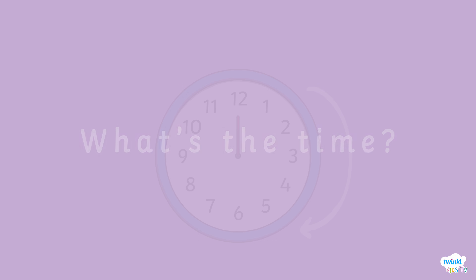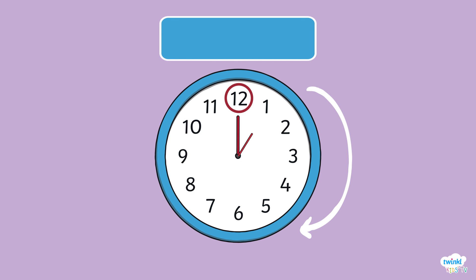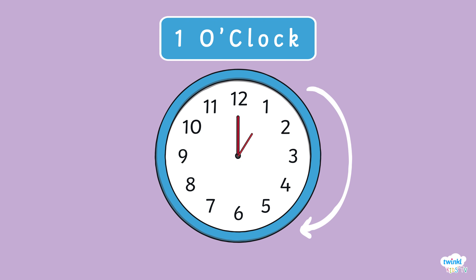What's the time? When the longer hand, the minute hand, is pointing to the number 12, and the smaller hand, the hour hand, is pointing to one of the hour numbers, we call this o'clock. For example, when the minute hand points to 12 and the hour hand points to one, we say it's one o'clock.